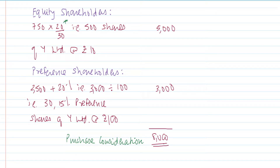This computation not only gives the purchase consideration but also shows the discharge of purchase consideration — how the purchase consideration was settled. The purchasing company will issue 500 equity shares at rupees 10 for the equity shareholders of the selling firm, and 30 fifteen-percent preference shares at rupees 100 to discharge the preference shareholders. Debentures are also issued to debenture holders, but that is ignored. Only what is paid to equity shareholders and preference shareholders forms part of the purchase consideration.